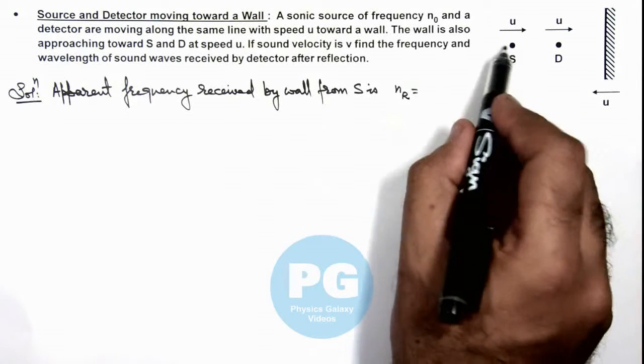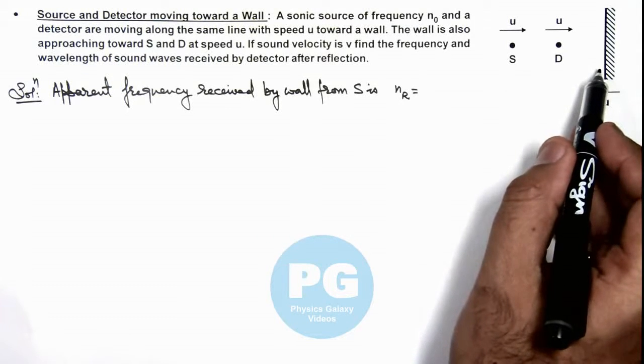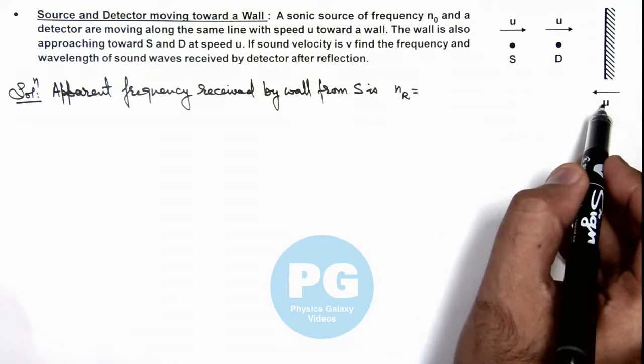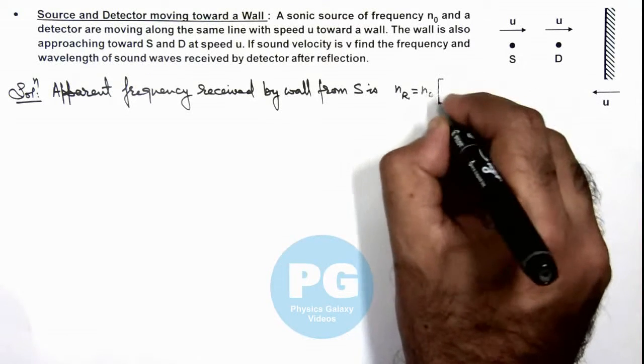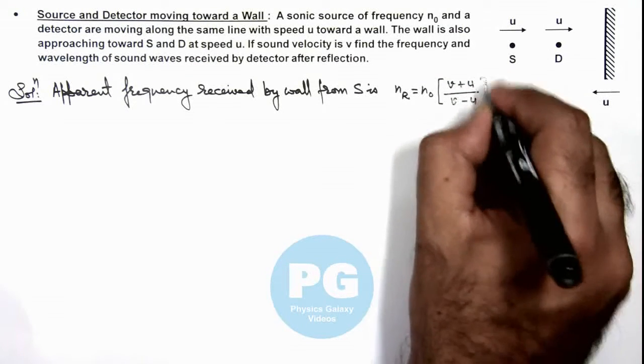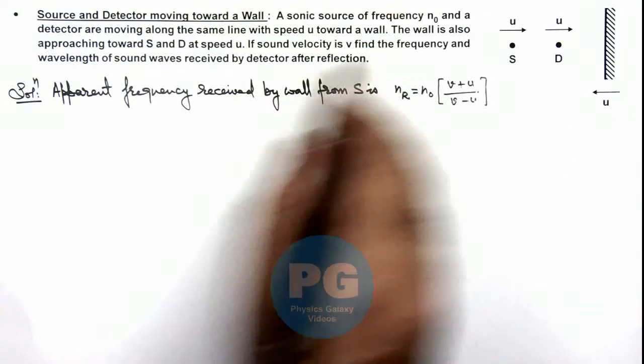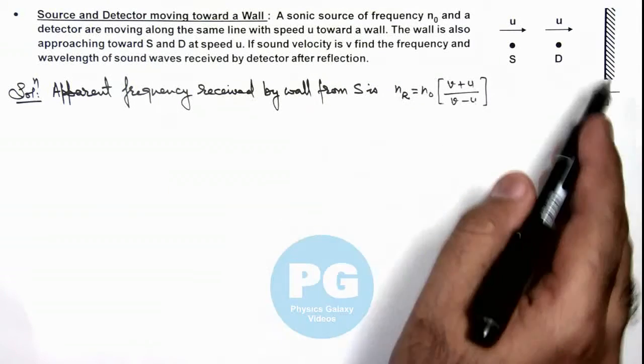As source is moving at speed u and wall we are considering as an observer that is also moving with speed u towards source, so this can be written as n₀ multiplied by (v + u) divided by (v - u). Here I am taking v as the velocity of sound. So this is the frequency received by wall.